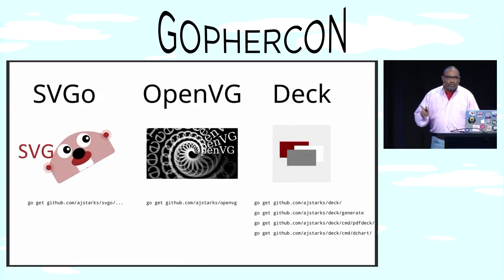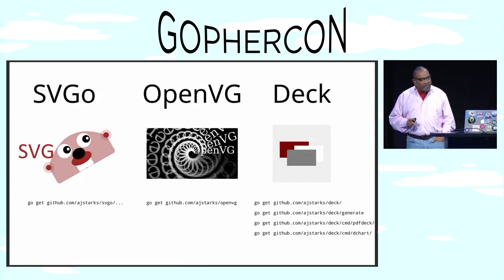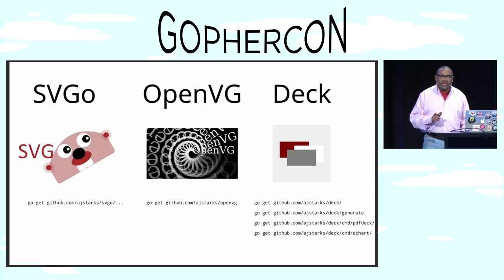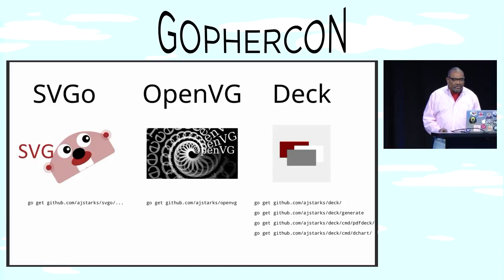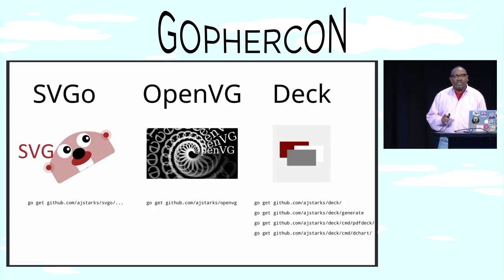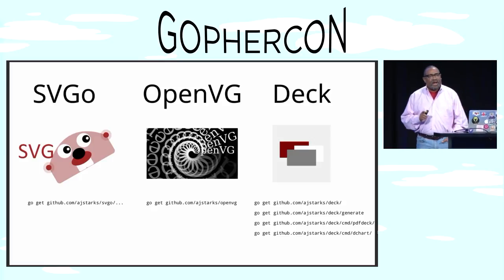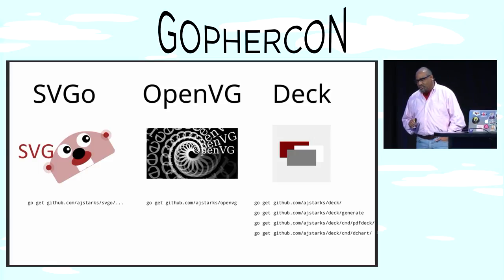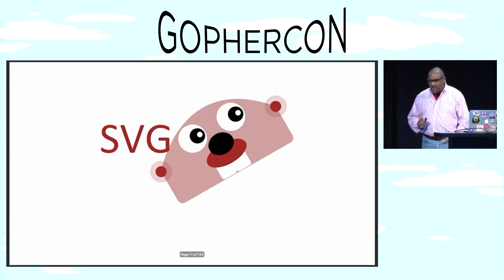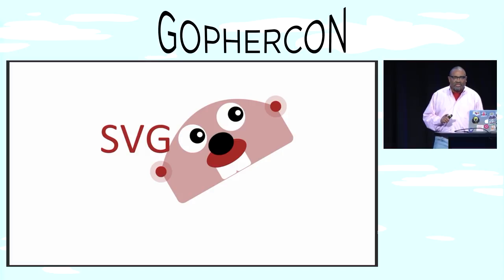Here are the tools we're going to explore — there are three of them. SVG Go, which does scalable vector graphics, the web standard for 2D graphics. OpenVG, a C wrapper for the Raspberry Pi. And DEC, which is a presentation program. Let's start with SVG Go.